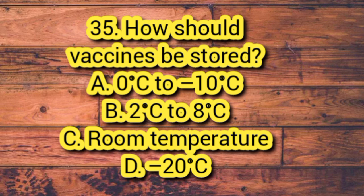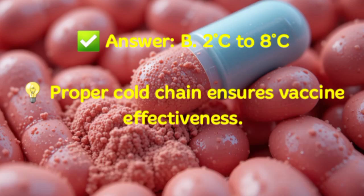Question 35. How should vaccines be stored? A. 0°C to -10°C. B. 2°C to 8°C. C. Room temperature. D. -20°C. Answer: B. 2°C to 8°C. Proper cold chain ensures vaccine effectiveness.